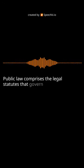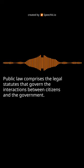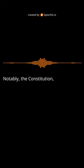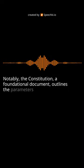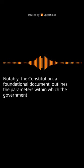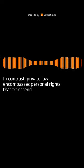Public law and private law are distinct entities. Public law comprises the legal statutes that govern the interactions between citizens and the government. Notably, the Constitution, a foundational document, outlines the parameters within which the government operates. In contrast, private law encompasses personal rights that transcend governmental jurisdiction and stem from a higher source.